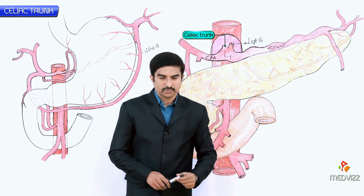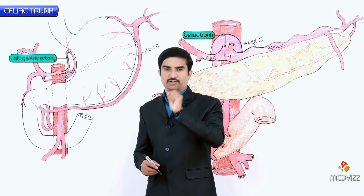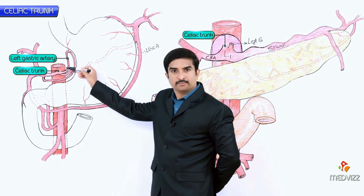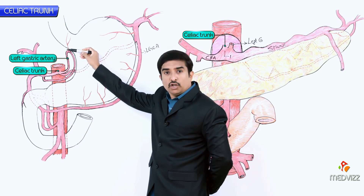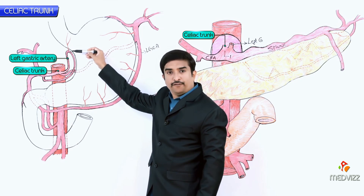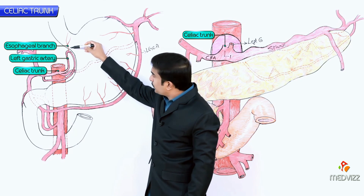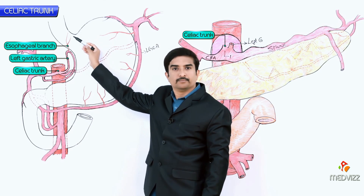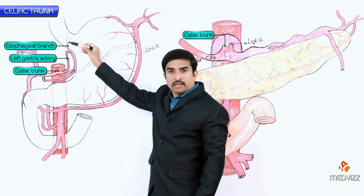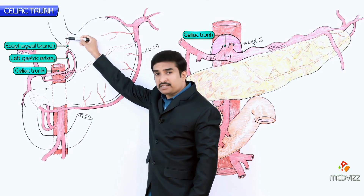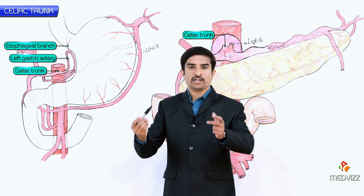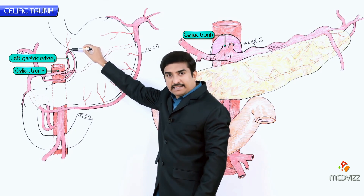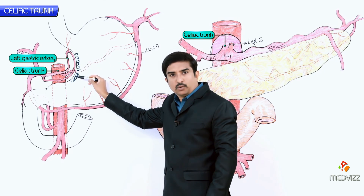The first branch is the left gastric artery, which is the smallest branch of the celiac trunk. It ascends towards the cardio-esophageal junction, where it sends off esophageal branches to supply the abdominal part of the esophagus and the cardiac part of the stomach. Some of these branches continue through the esophageal hiatus of the diaphragm and anastomose with esophageal branches of the thoracic aorta.